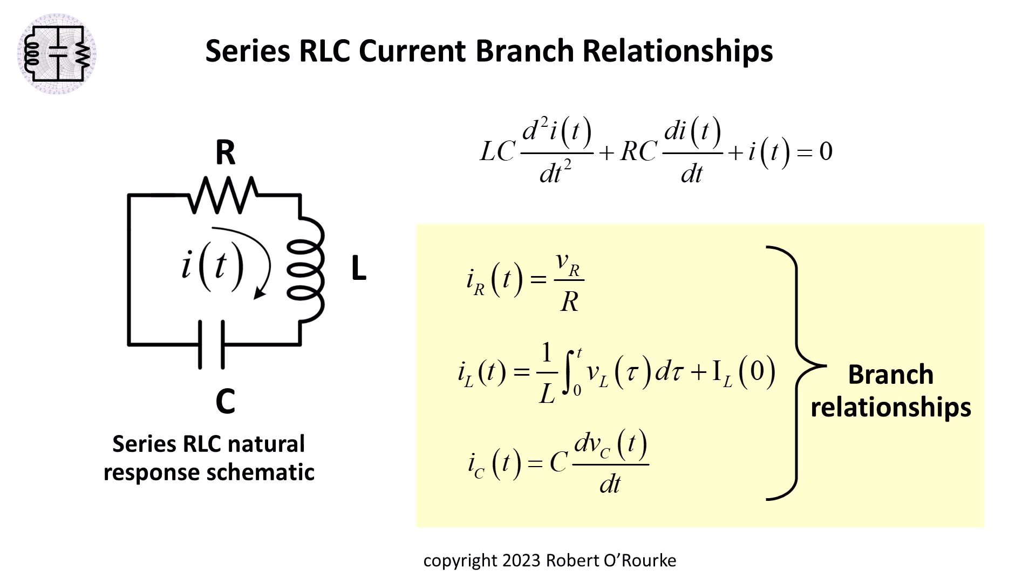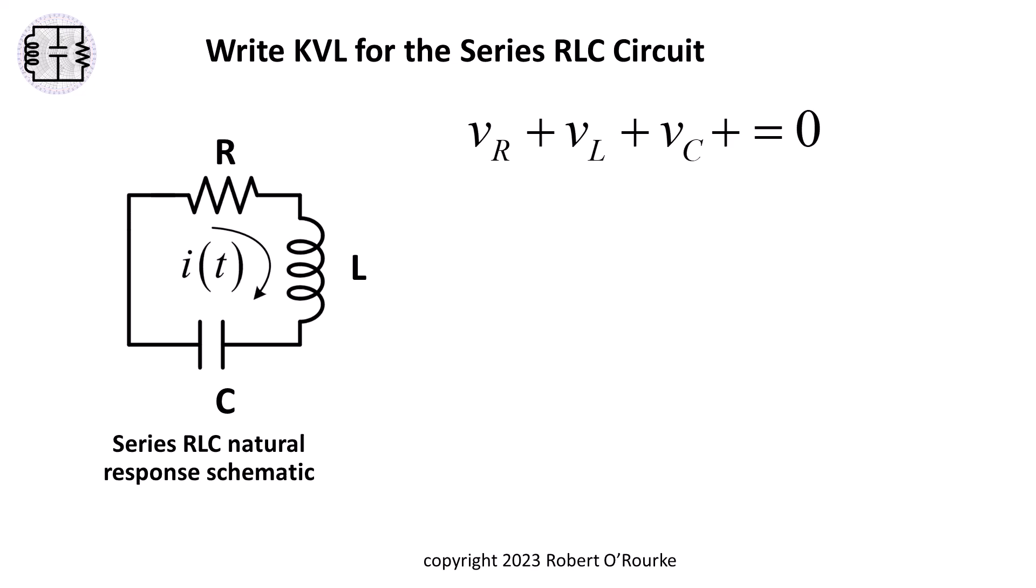But how do we get the series RLC differential equation from the branch relationships? The answer is Kirchhoff's laws. In the case of this series RLC circuit, we can write Kirchhoff's voltage law, KVL, for the loop.